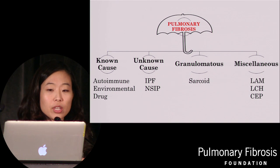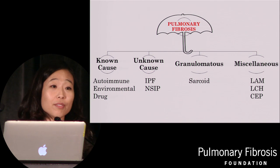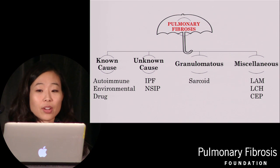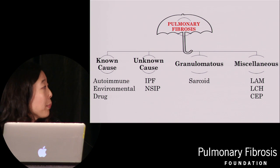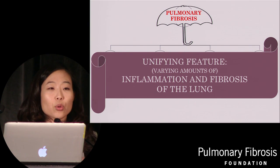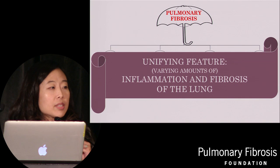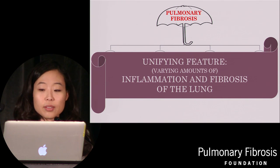The third major category are granulomatous conditions such as sarcoidosis. The last category is what I tell my patients is my garbage can category — it doesn't fit nicely into the others. These include things like lymphangiomyomatosis, Langerhans cell histiocytosis, and eosinophilic pneumonia. The reason these seemingly unrelated diseases are grouped together is based on a single unifying feature: varying amounts of inflammation and scarring of the lung.